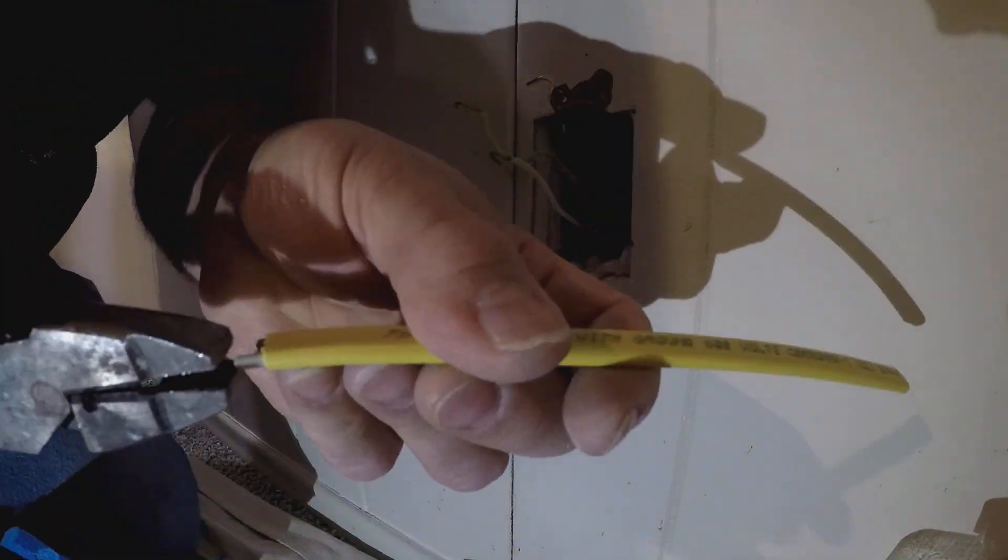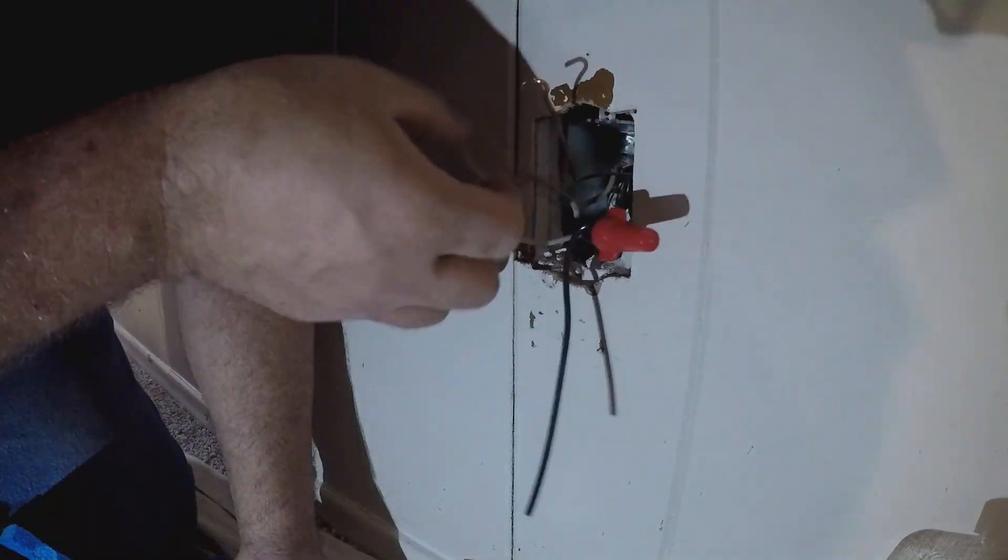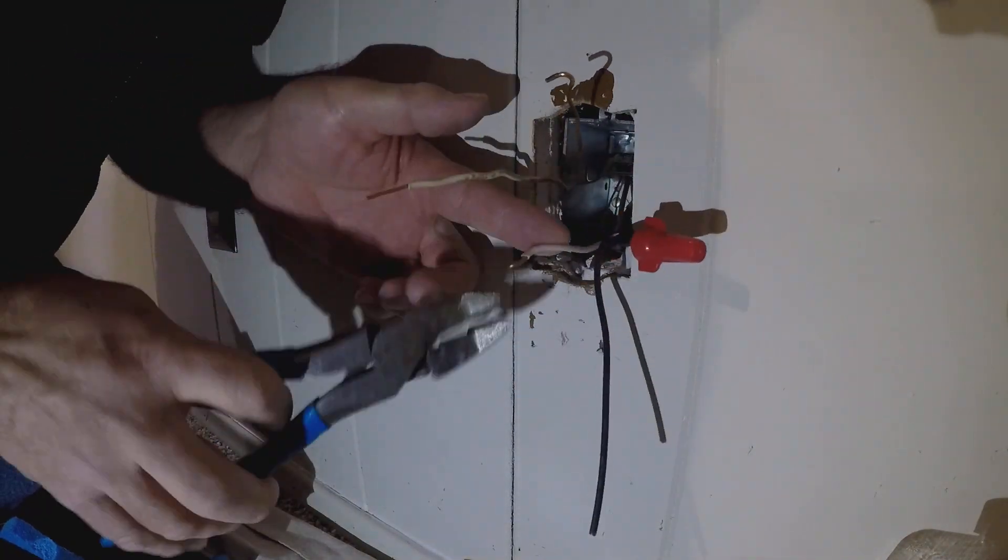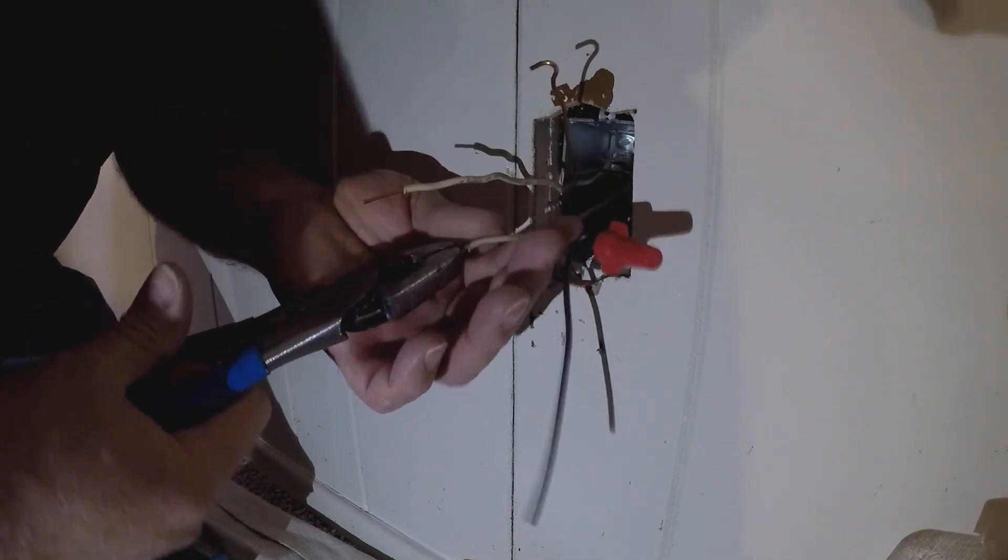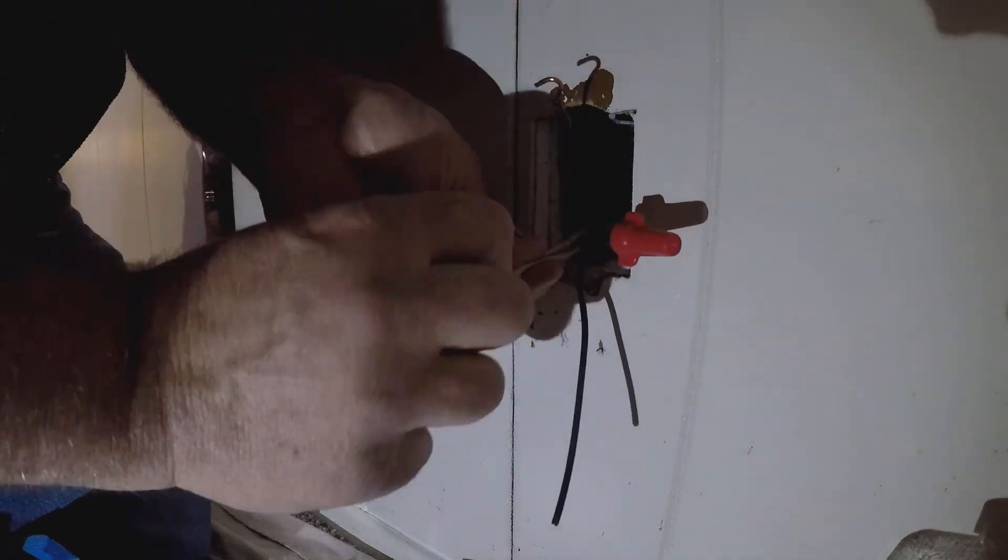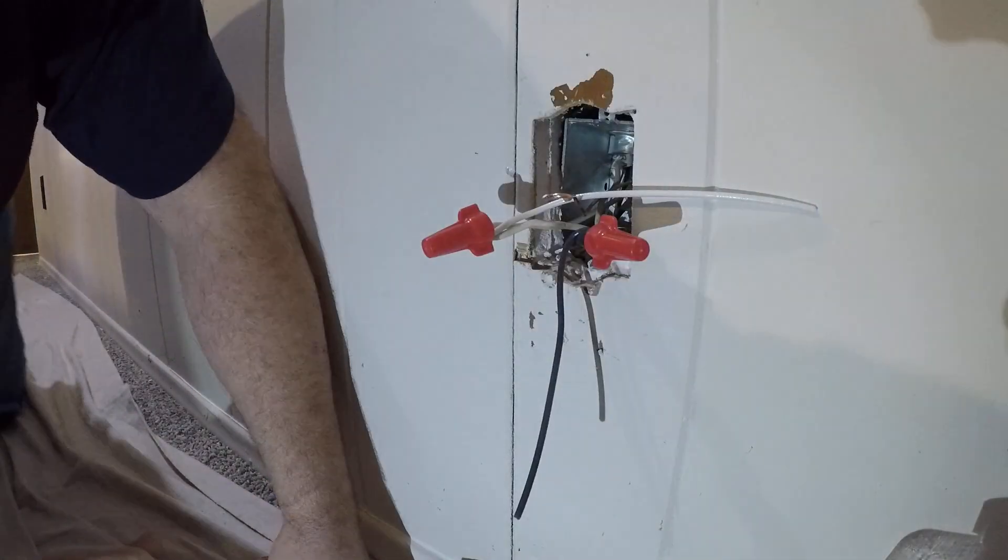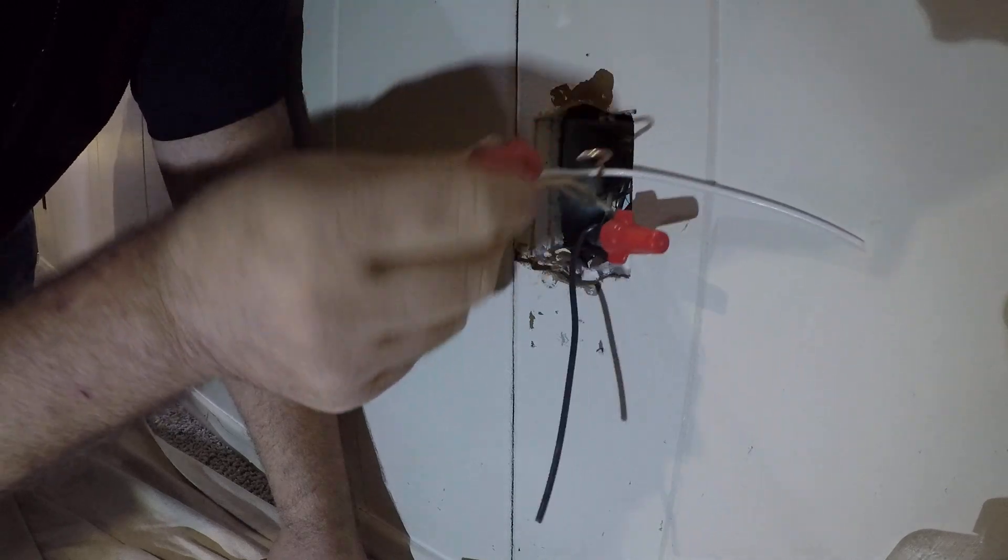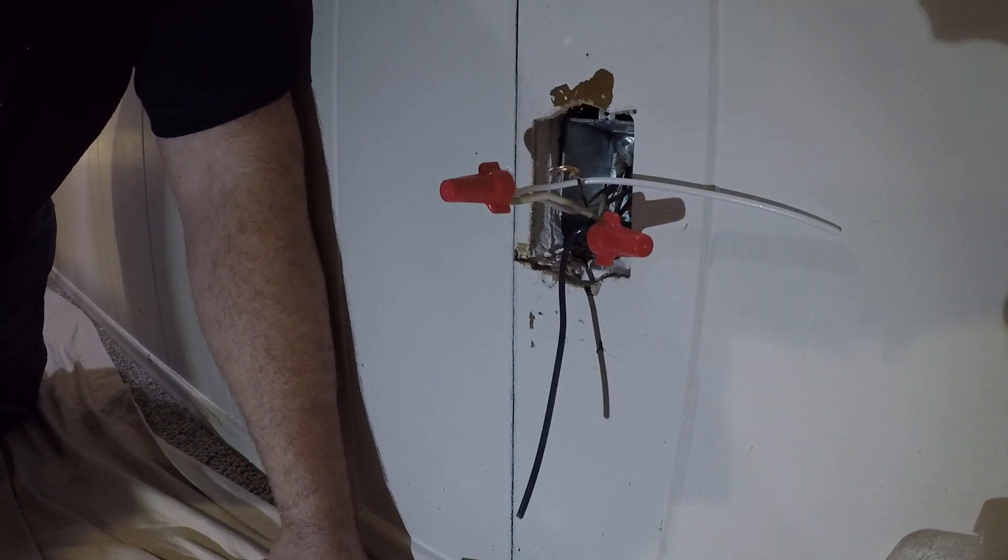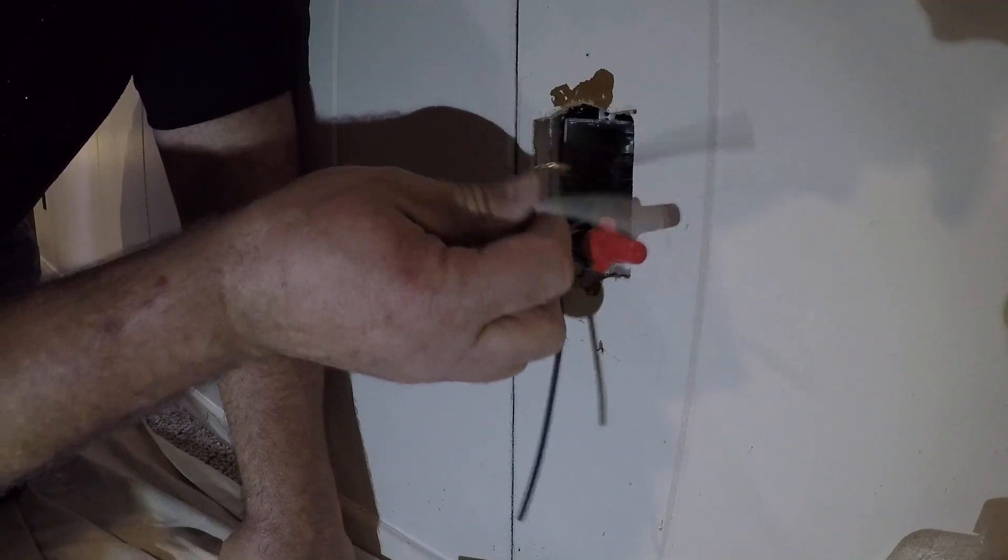And then we will have only one white, one black, and one ground attaching to the outlet. And again, I do that because it makes it easier to manipulate the outlet and position it. But also, if in the future the outlet has to be taken out, it does not break the circuit. The circuit will continue to work down the line at other outlets. And what do we got going with our ground wire here? I'm going to mess with the ground wire here.